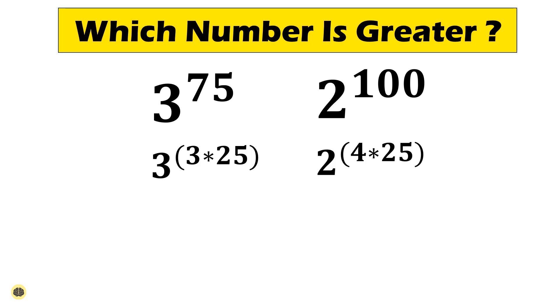Continuing our journey into simplification, we transform 3 power (3 times 25) into 27 power 25, and 2 power (4 times 25) into 16 power 25. Now with the exponents equal at 25 for both bases, we are ready to make an informed comparison. So what do we find? 27 power 25 is indeed greater than 16 power 25.